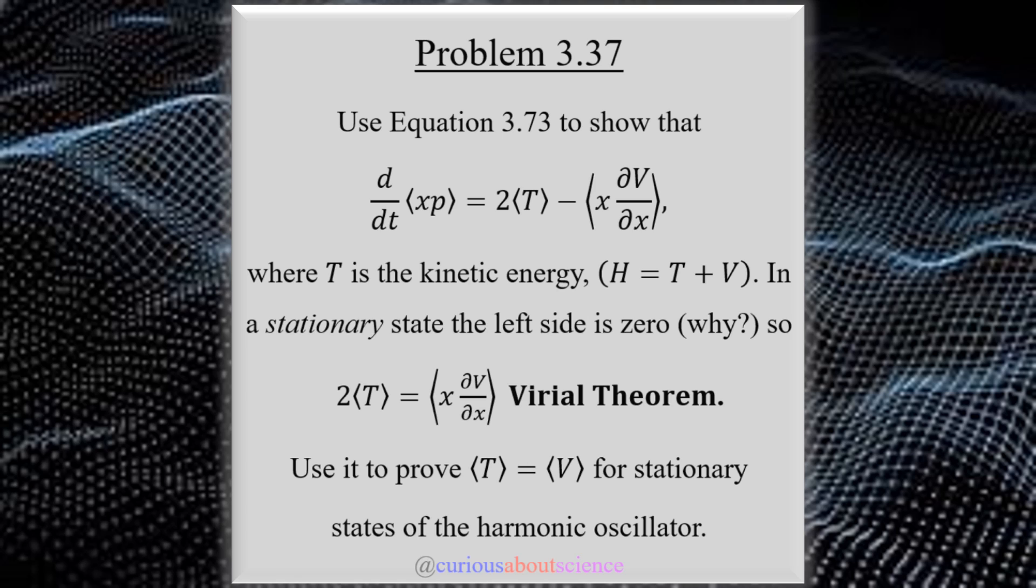position and momentum, is equal to 2 times the expectation value of kinetic energy minus x ∂V/∂x, the partial of course. Here, T is the kinetic energy. Remember, Hamiltonian is the kinetic plus the potential.